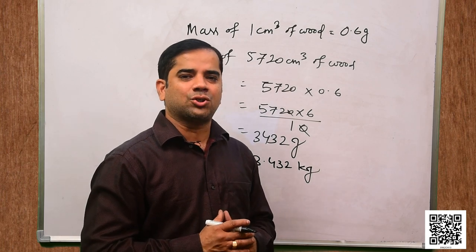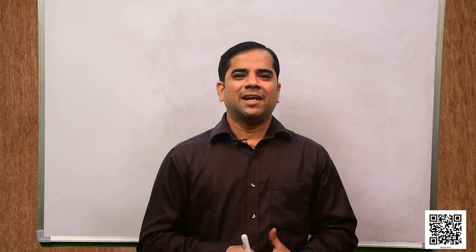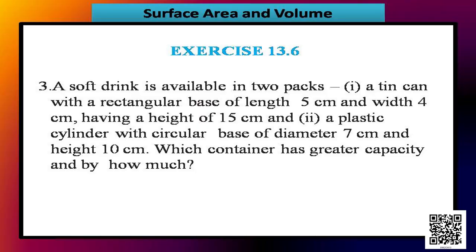Hope you understand the solution. Let us now discuss question number 3. A soft drink is available in 2 packs: first, a tin can with a rectangular base of length 5 cm, width 4 cm and height 15 cm; and second, a plastic cylinder with circular base of diameter 7 cm and height 10 cm. Which container has greater capacity and by how much?